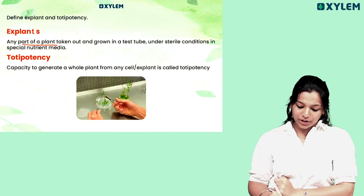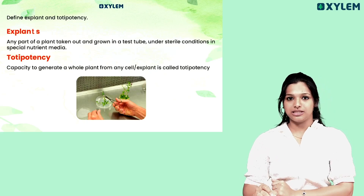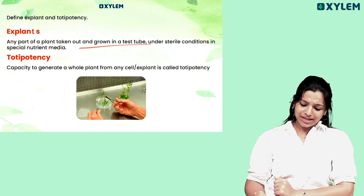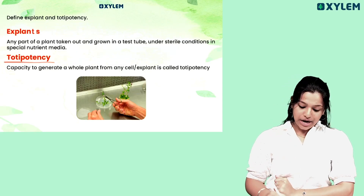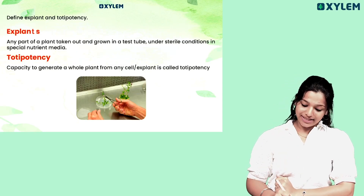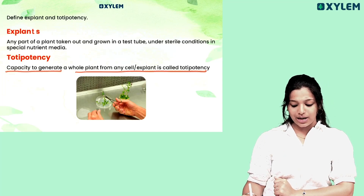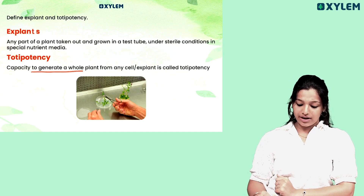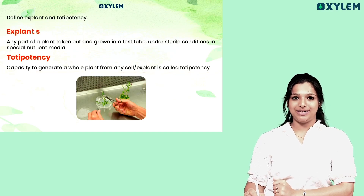What is explant? Any part of a plant taken out and grown in a test tube under sterile conditions in a special nutrient medium is called an explant. What is totipotency? The capacity to generate a plant from any cell or explant is called totipotency.